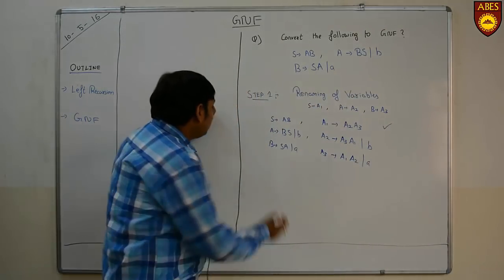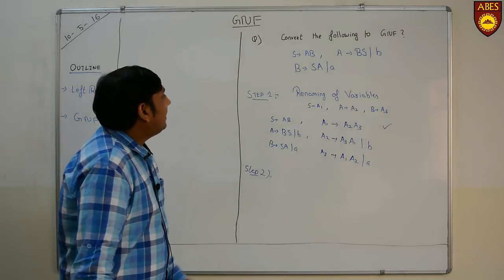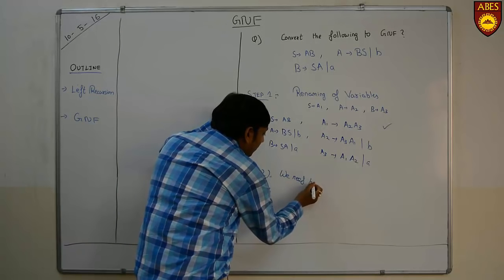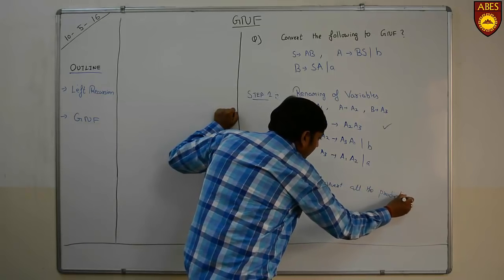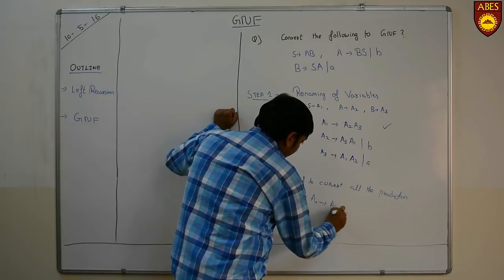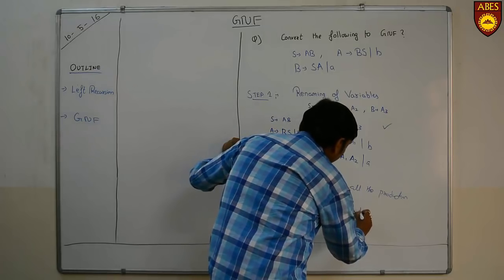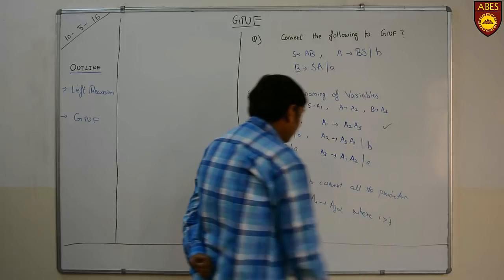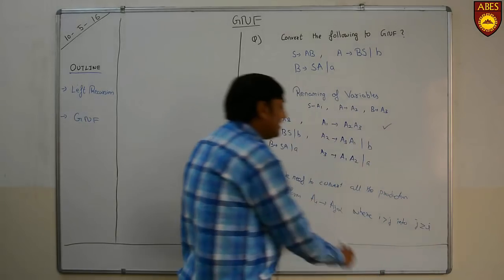This was step 1. Now according to step 2, the algorithm says we need to convert all productions of the form Ai tends to form Aj alpha, where i is greater than j, into a form where i is less than or equal to j.